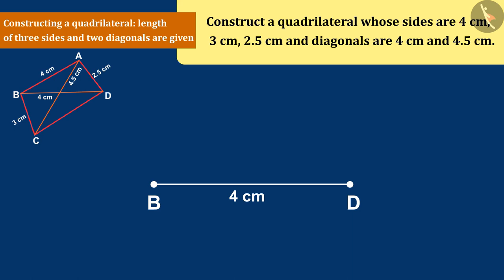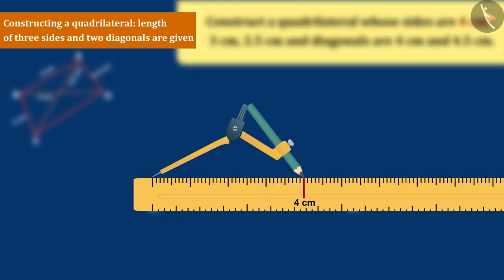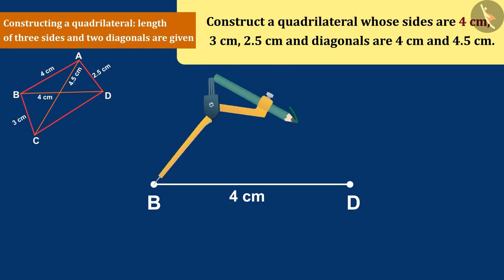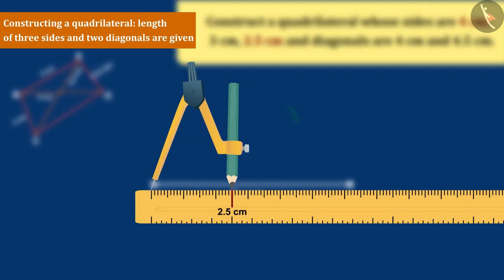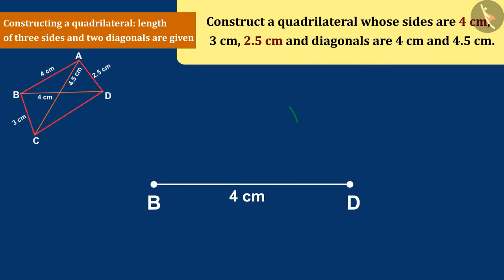Taking B as the center, he draws an arc with a radius of 4 cm, then draws another arc of radius 2.5 cm assuming D to be the center, and names the intersection point of both arcs as A.